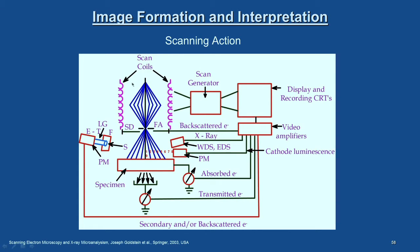What you see here are the scan coils and the electron beam falling on the sample. There is an ET detector — we will see what that is — and the Faraday cage, the scintillator, and the photomultiplier. There is a scan generator and a display and recording CRT, along with X-ray detectors, wavelength dispersive spectrometers, and energy dispersive spectrometers.